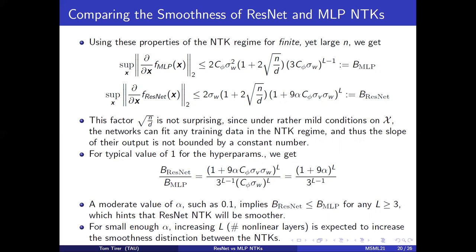Second, for small enough alpha, increasing the number of layers decreases the ratio, which means that the smoothness distinction would increase.